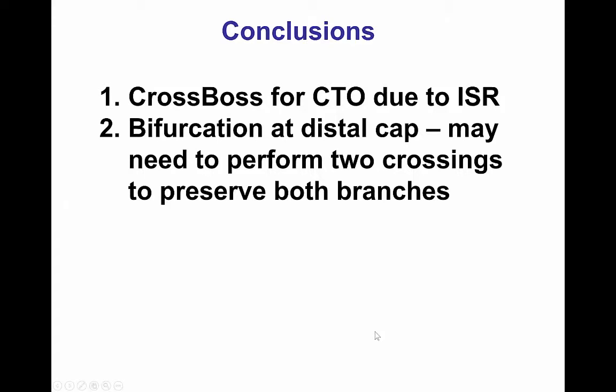So in summary, the CrossBoss can be very useful for CTOs due to in-stent restenosis, and can sometimes cross very well even through long lengths of occlusion. However, when there is a bifurcation at the distal cap, crossing might lead to loss of patency of the other branch, requiring separate crossing to restore patency of both of those branches.